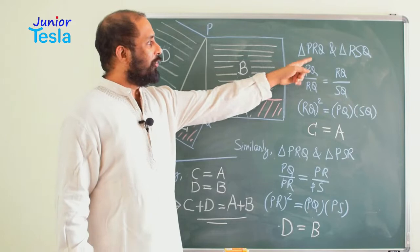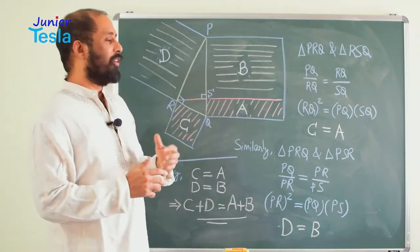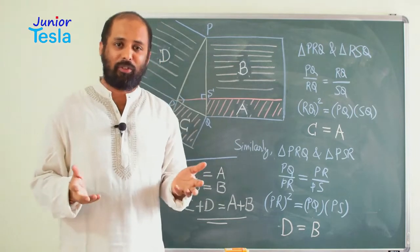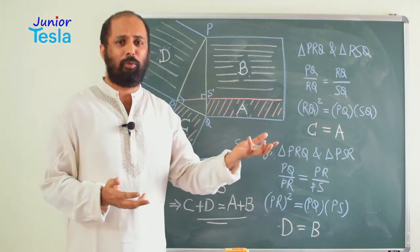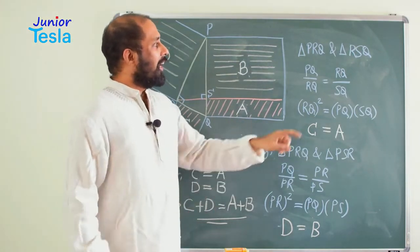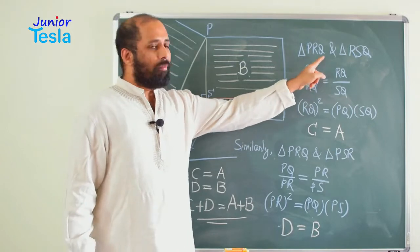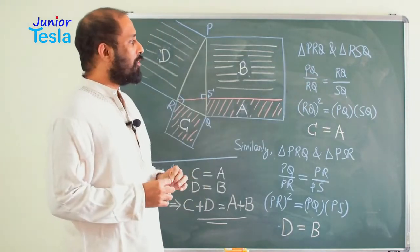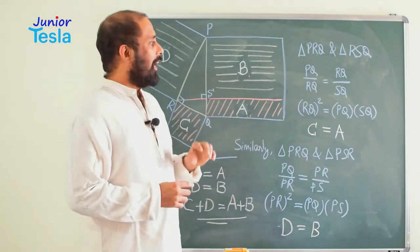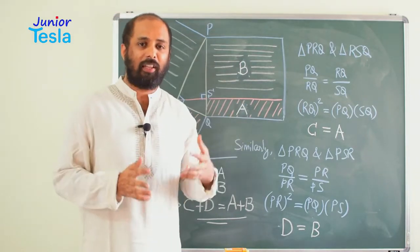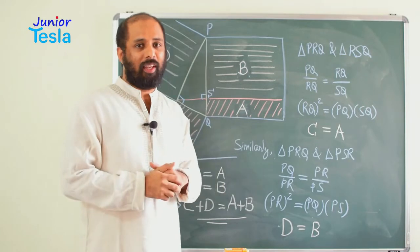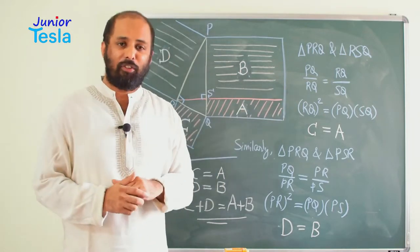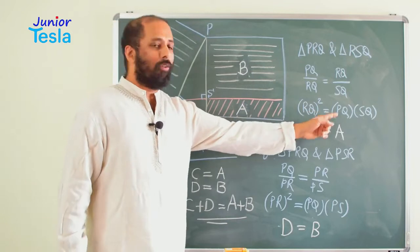I have taken two triangles — triangle PRQ, that is the original triangle, and triangle RSQ. Now we know that these two triangles are similar; it is very easy to prove that. From these two similar triangles, I have taken some ratios. The first ratio is PQ by RQ, and RQ by SQ is the second ratio. These two ratios are equal. By cross multiplying, I can say RQ square is equal to PQ into SQ.